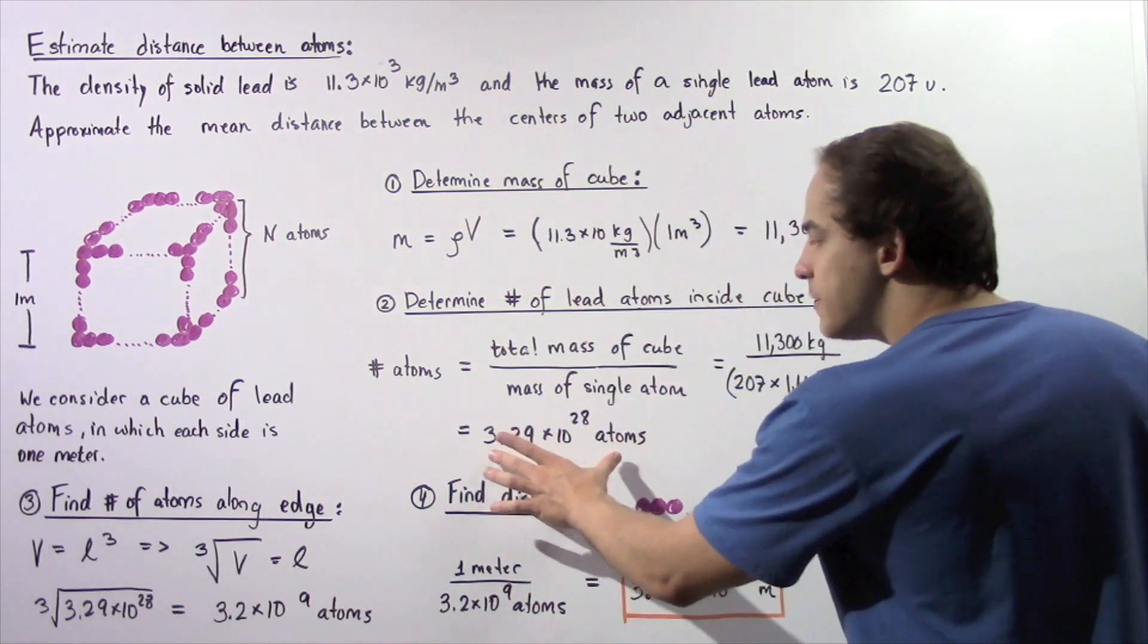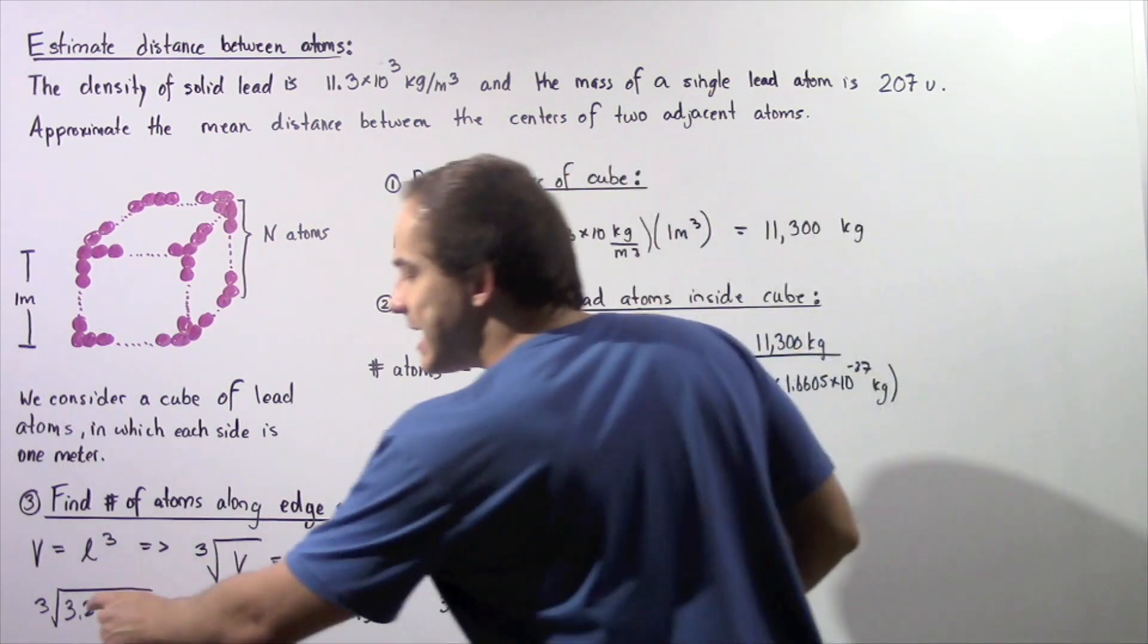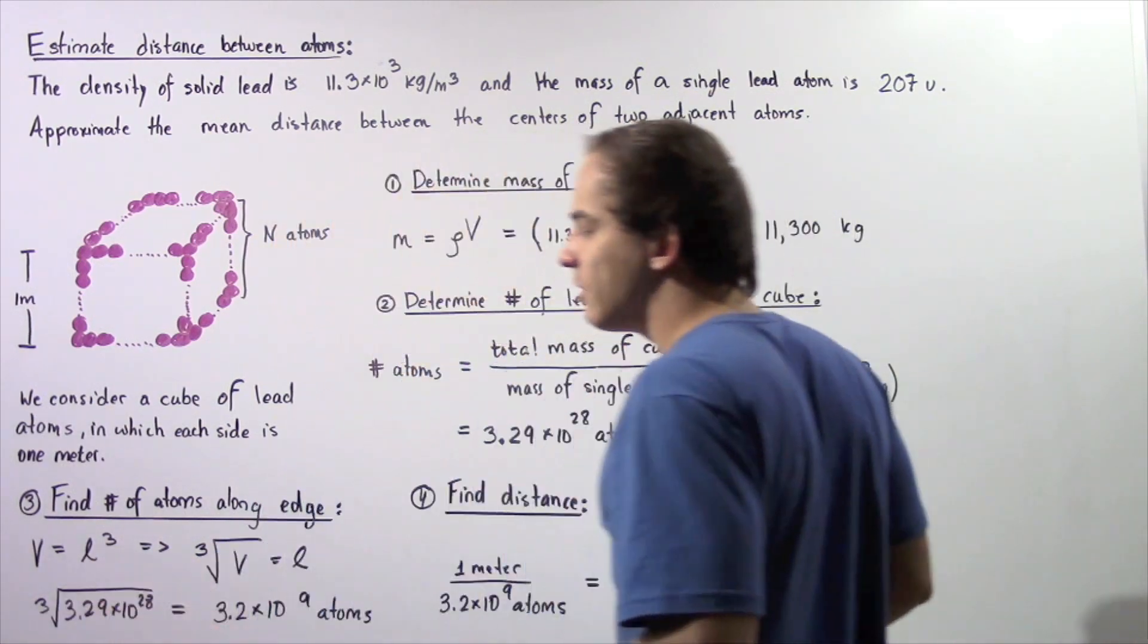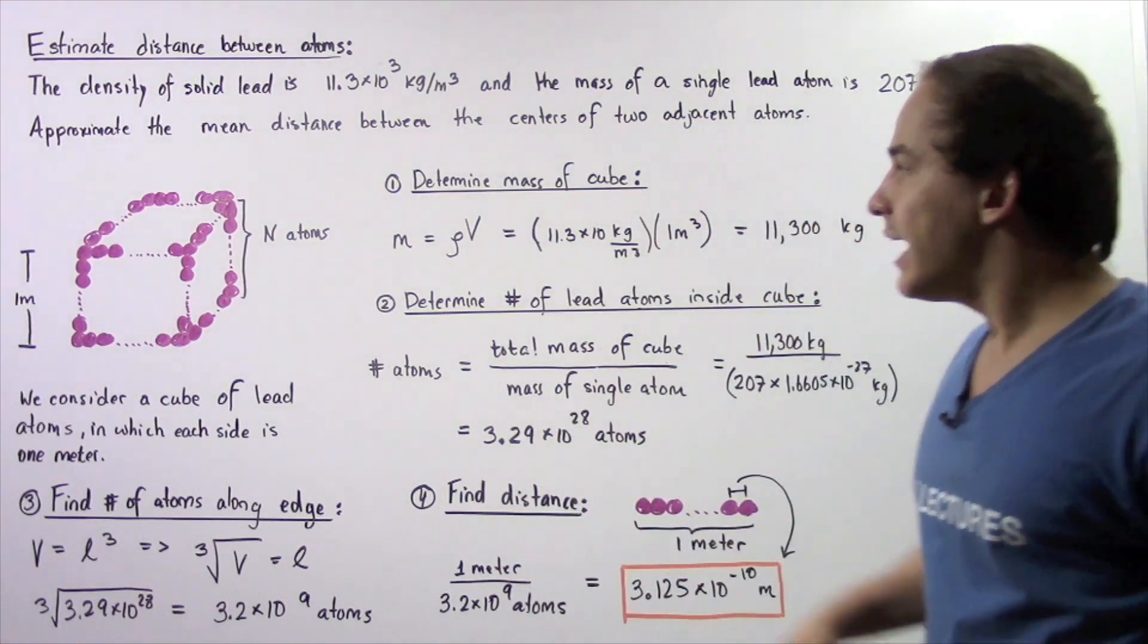So we know that we have this many atoms in one meter cube volume of lead. So that means we take this value and we take the cube root of this value.